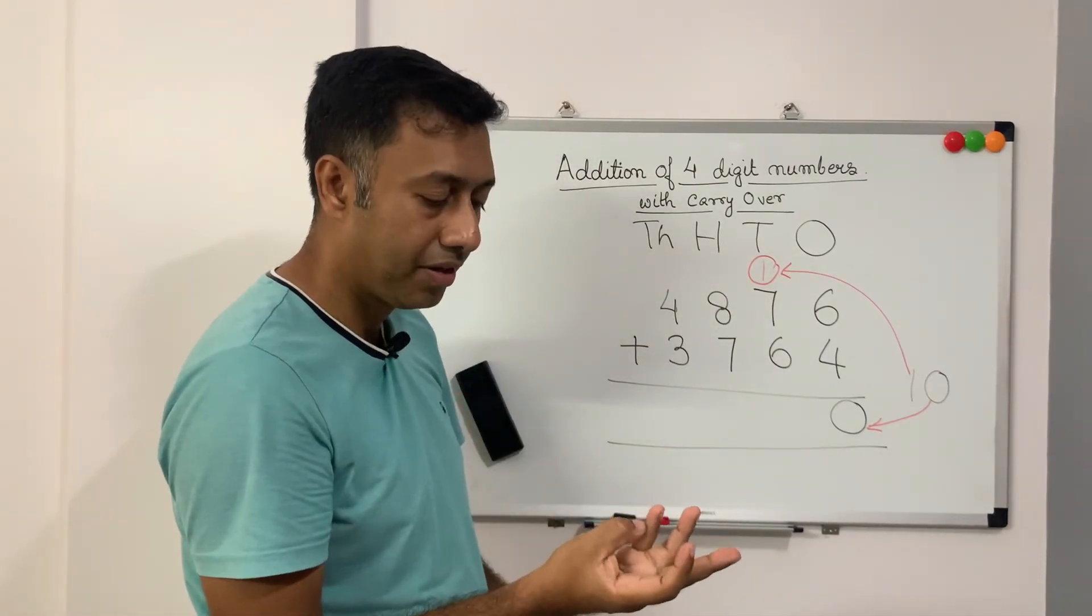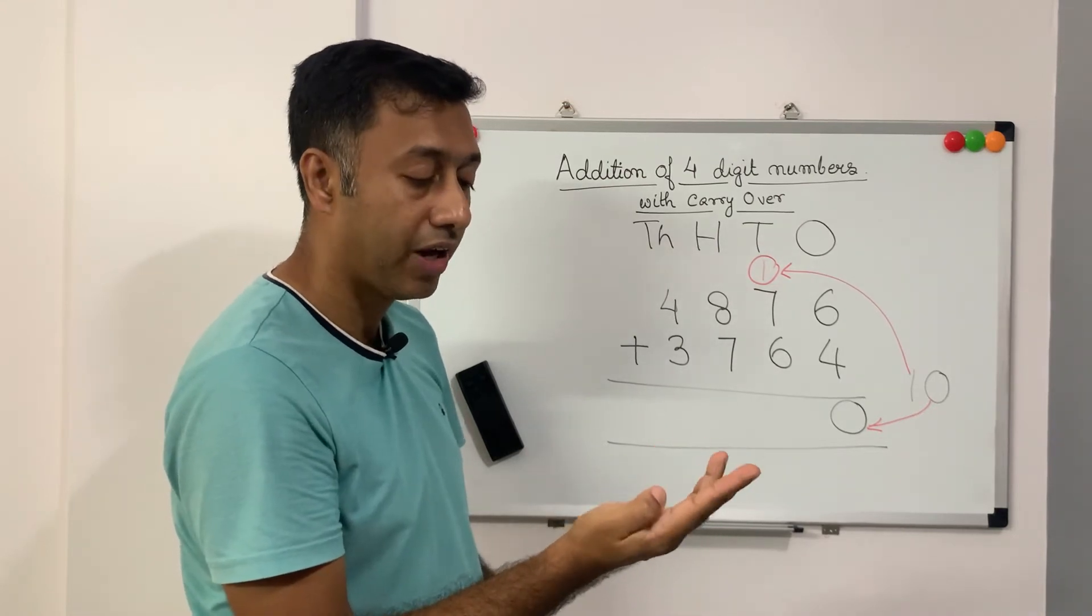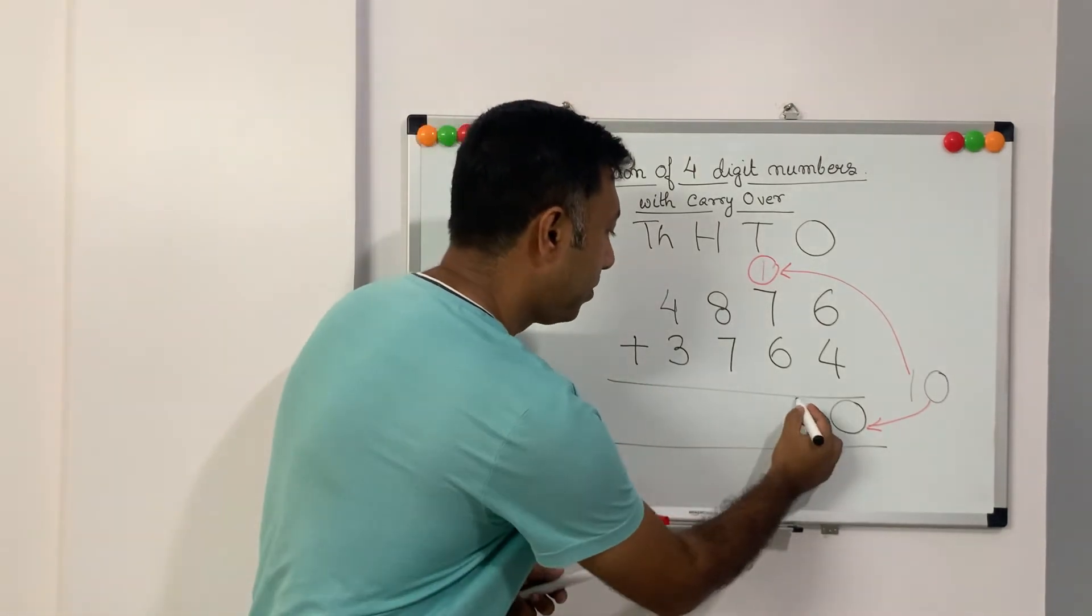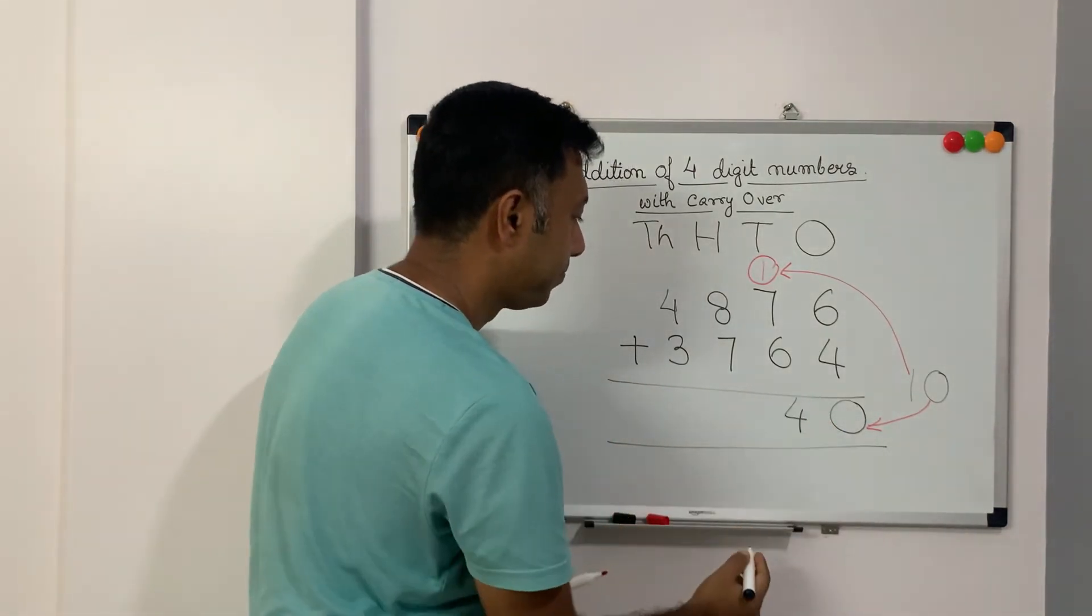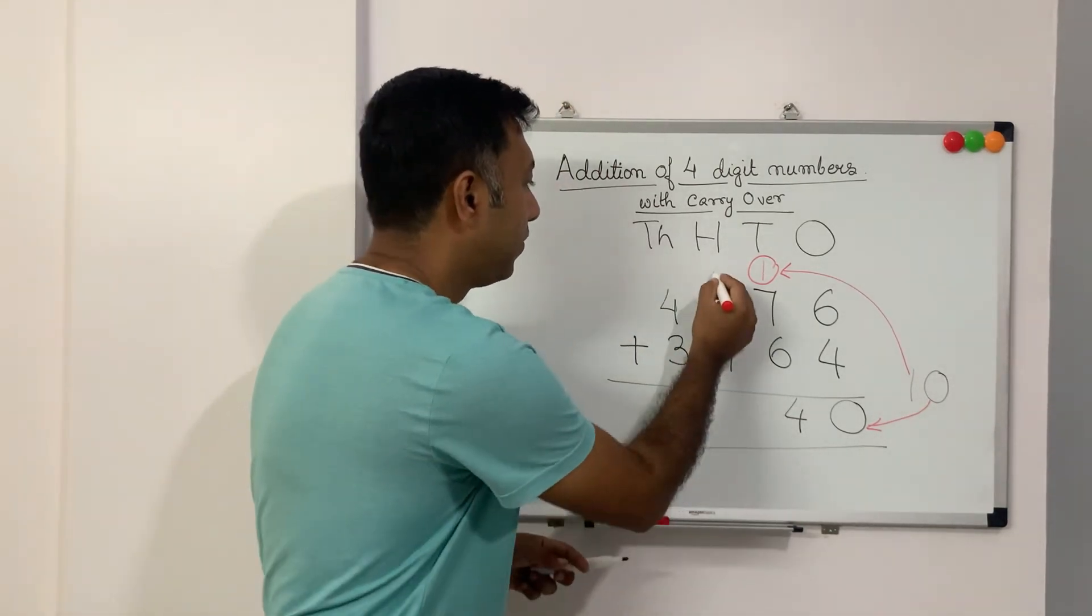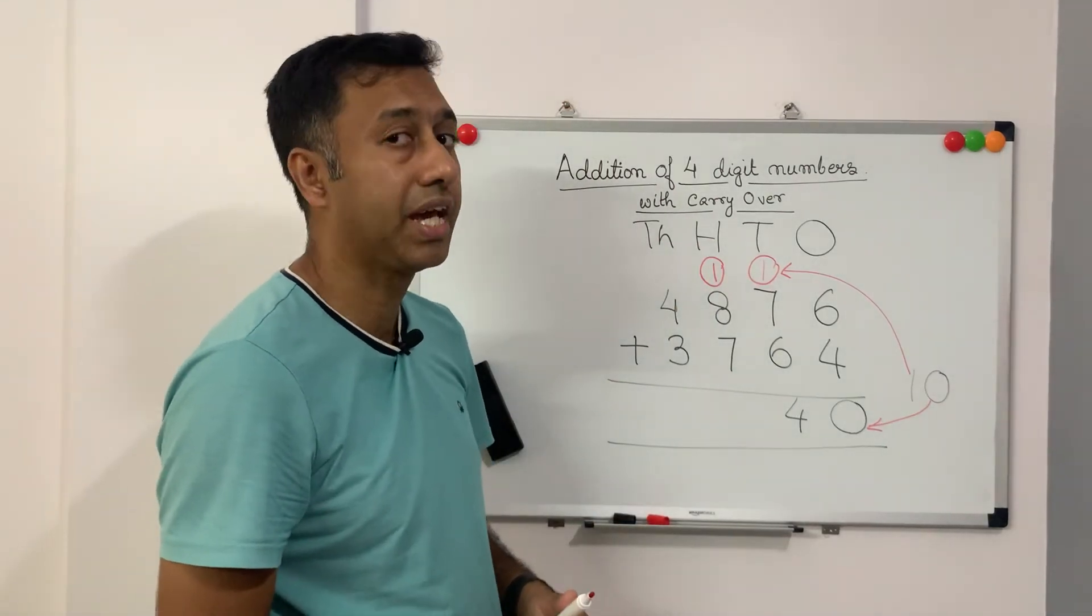So now we have to do 1 plus 7 plus 6. So 1 plus 7 is 8 plus 6. So it is 14. So we will write 14. Okay. And the 1 of 14 we will write here. That is called carry over.